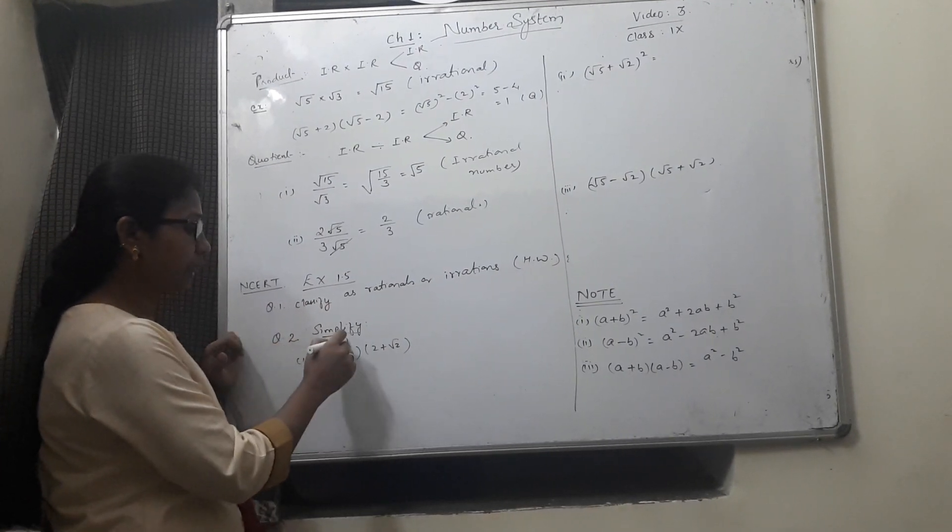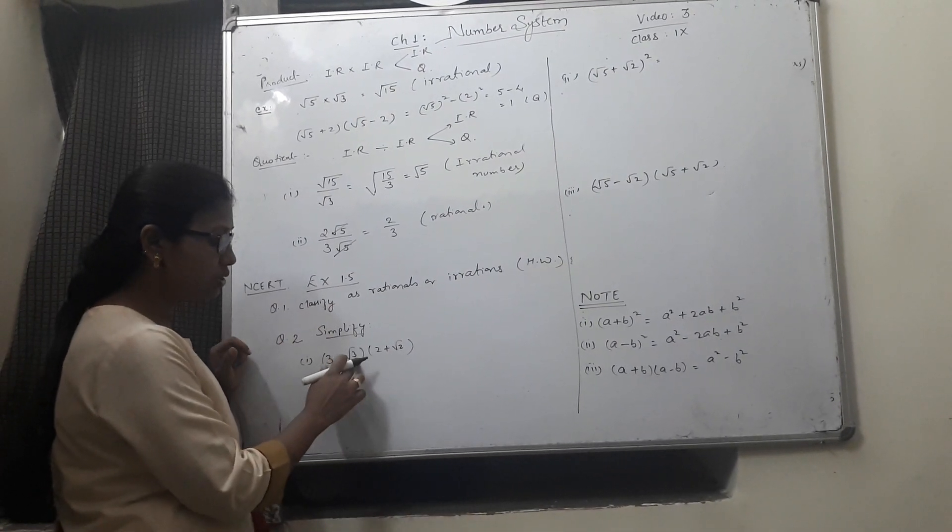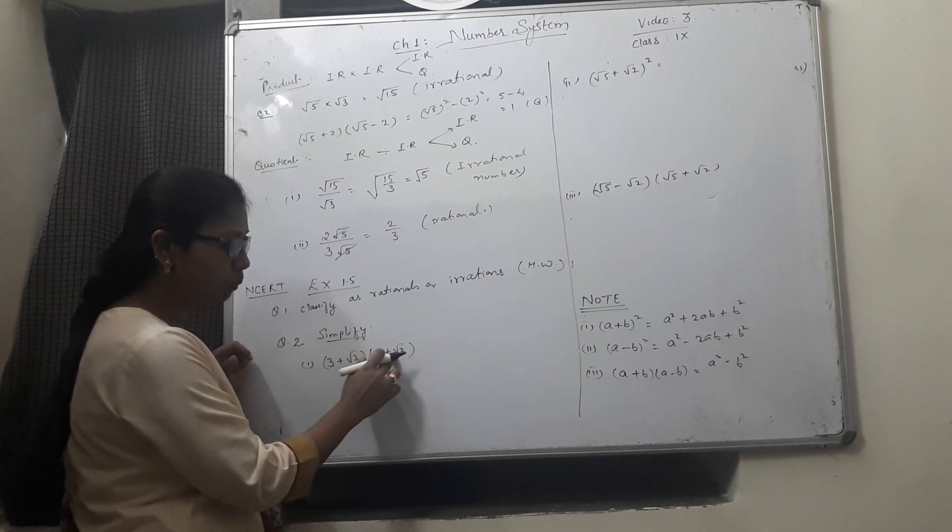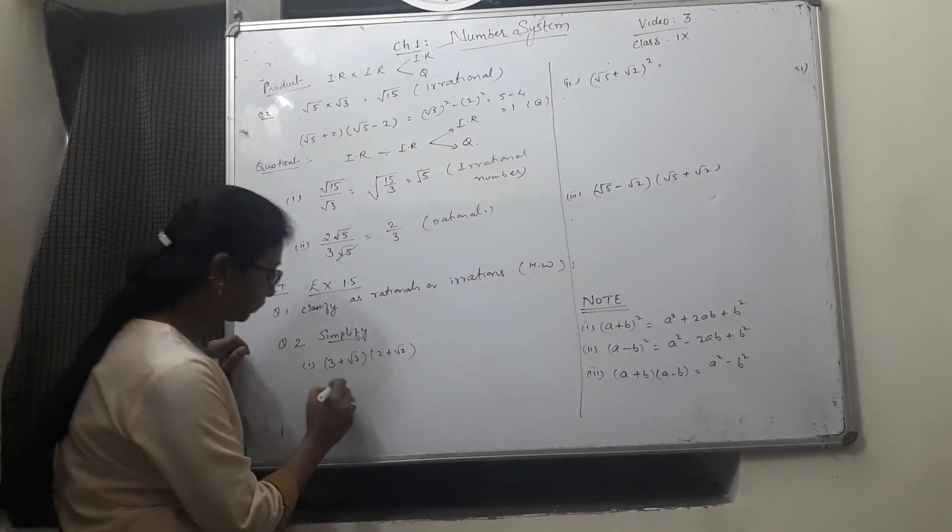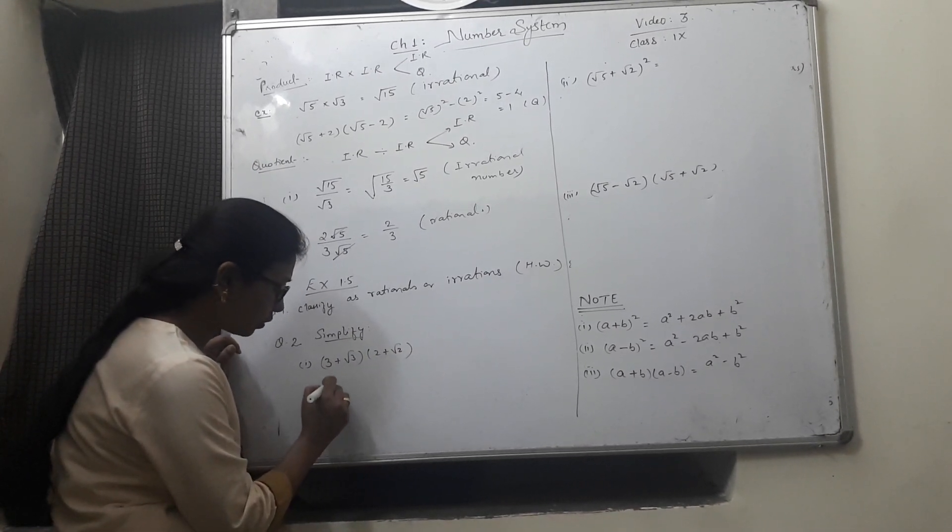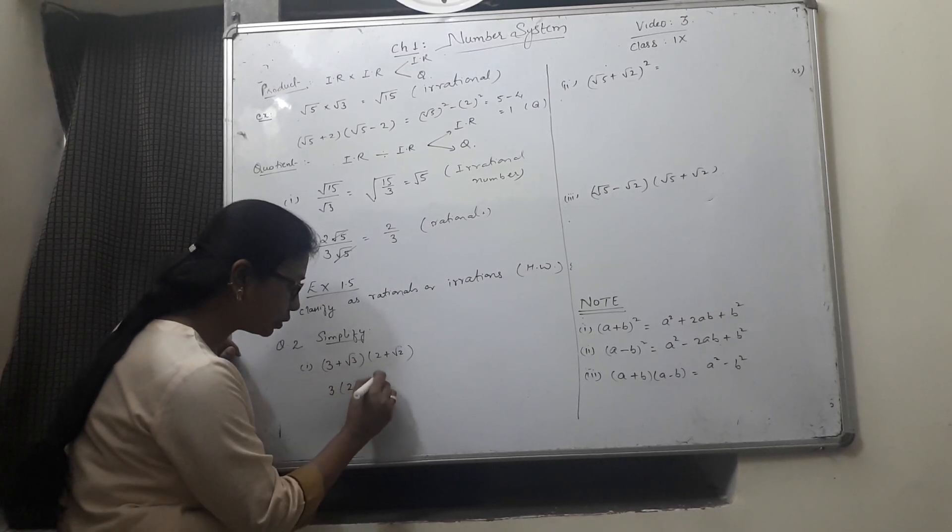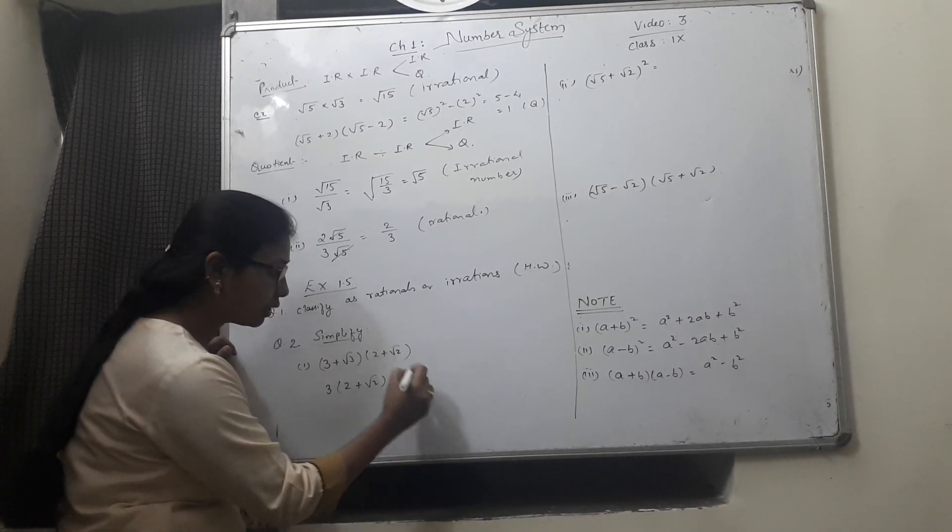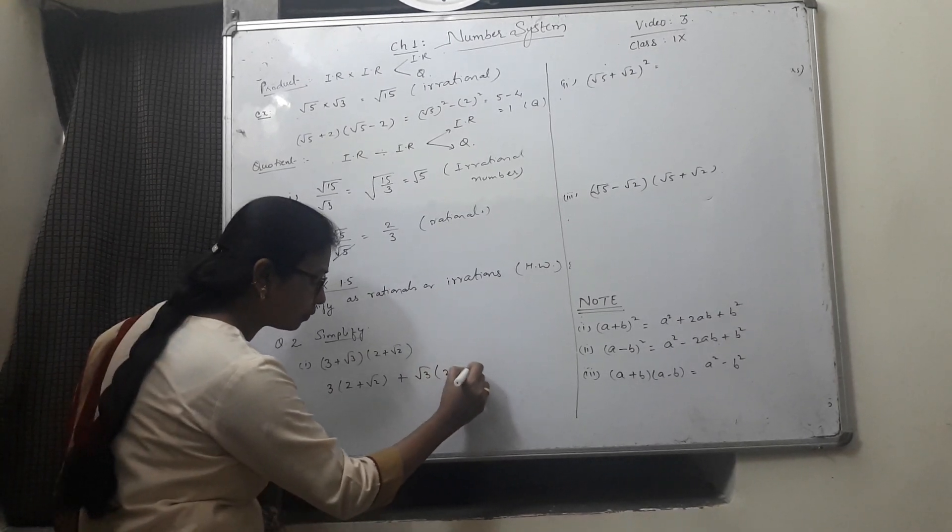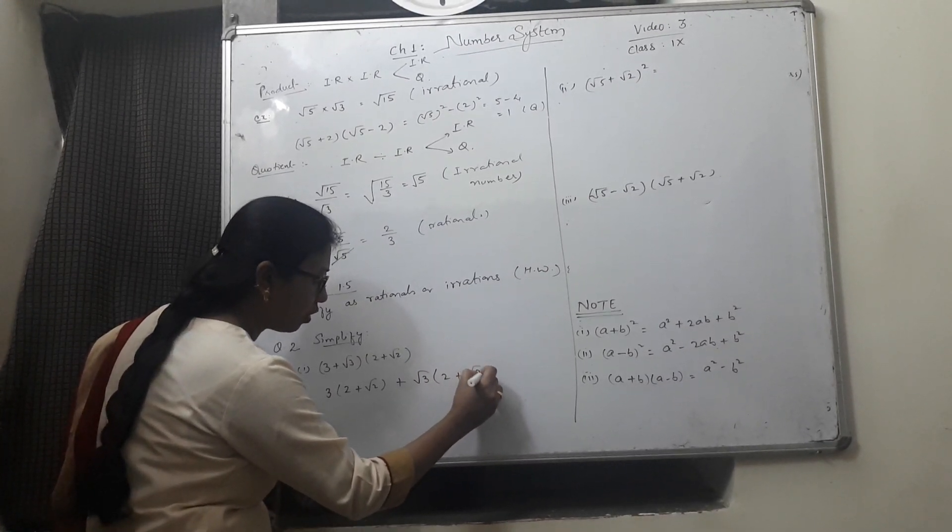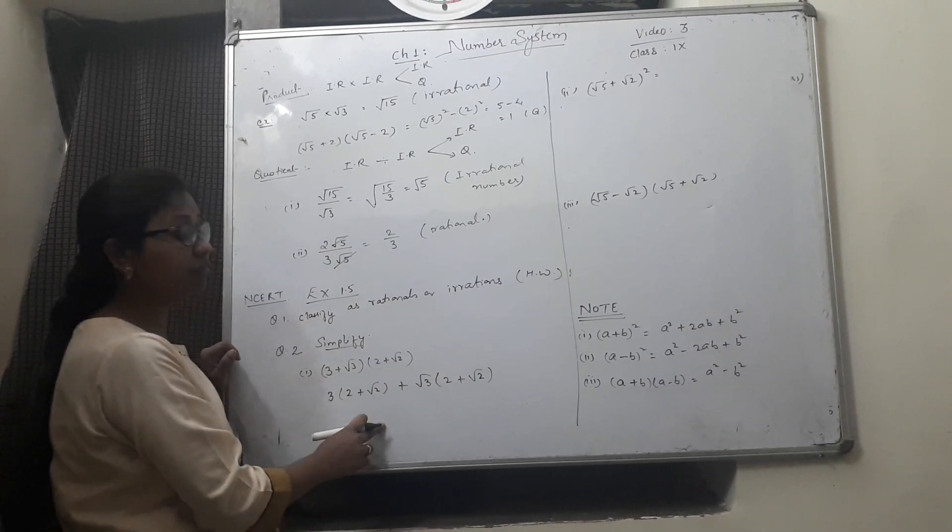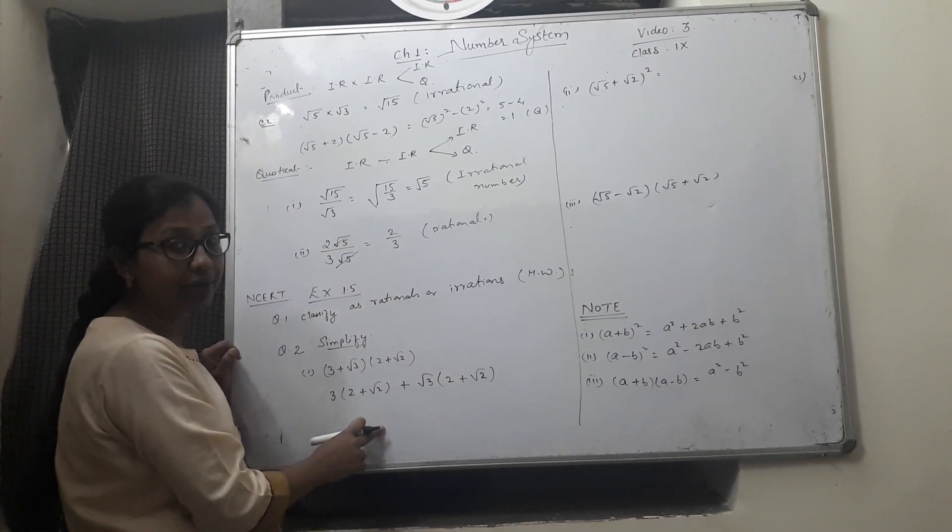Question number 2. Simplify 3 plus root 3 into 2 plus root 2. So first term 3 will multiply by both terms, 2 plus root 2. Then second term. We use the same method as we were solving for algebraic identities.